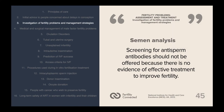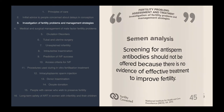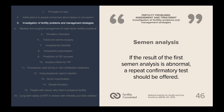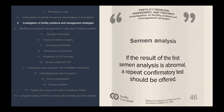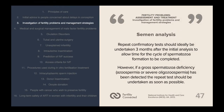Screening for anti-sperm antibodies should not be offered because there is no evidence of effective treatment to improve fertility. If the result of the first semen analysis is abnormal, a repeat confirmatory test should be offered. However, if a gross spermatozoa deficiency, including azoospermia or severe oligozoospermia, has been detected, the repeat test should be undertaken as soon as possible.